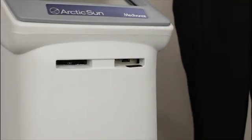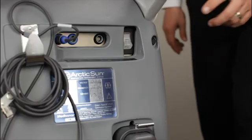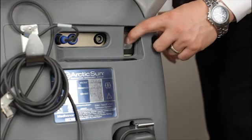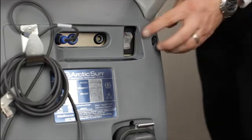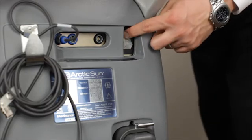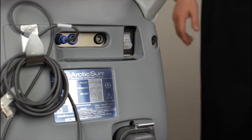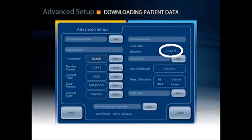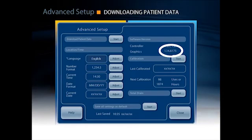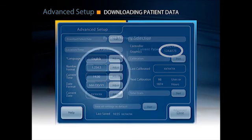Remove the USB and cycle the power. Verify that the Arctic Sun 5000 temperature management system powers up normally. Re-enter the advanced setup screen to verify the graphic software version is 1.14, followed by a 3 to 5 digit number that is unique to each control panel.